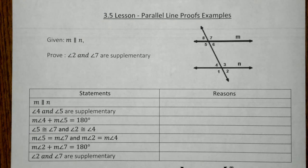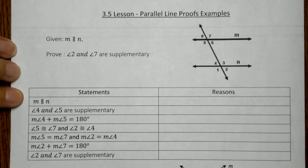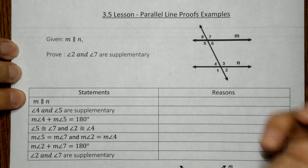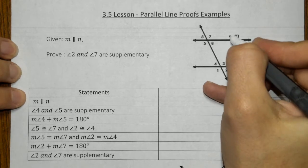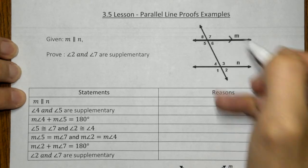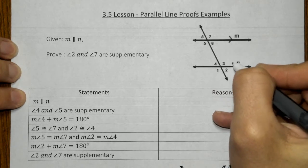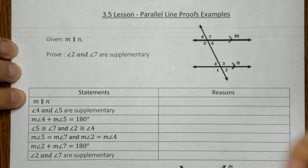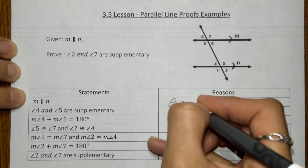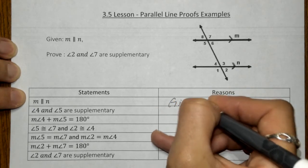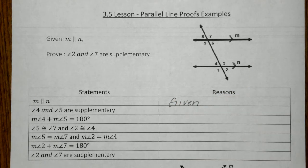Our first proof here — in our given as well as statement number one — says that line M is parallel to line N. We want to make sure we mark that, and we know that our first reason is always going to be given.